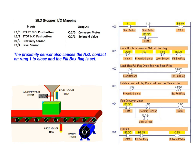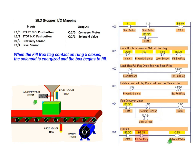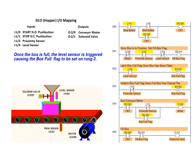The proximity sensor also causes the NO contact on rung 1 to close, which in turn sets the fill box flag. When the fill box flag contact on rung 5 closes, the solenoid valve is energized, and as a result, the box begins to fill. Once the box is full, the level sensor is triggered, causing the box full flag to be set on rung 2.